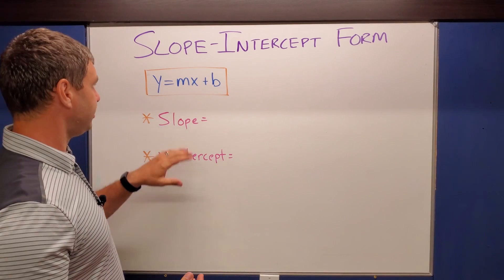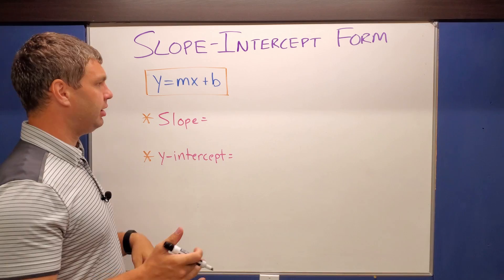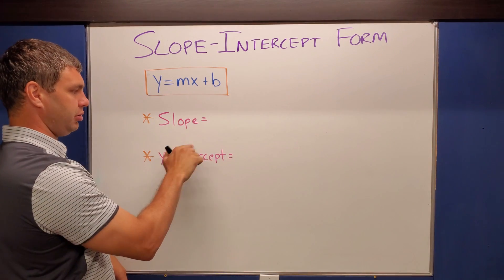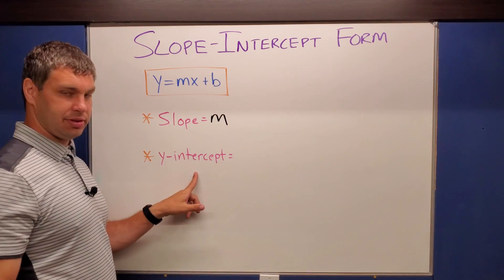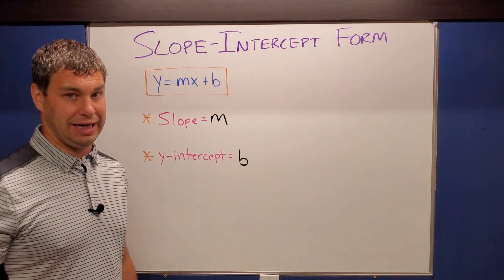Slope intercept form is the next one we're going to talk about. This is in the form y equals mx plus b. You may have heard that before. There's two things in here besides our y and our x, and that's the m and the b. The m of course is going to be our slope, and then the b is going to be what's known as the y-intercept, or where the graph crosses the y-axis.